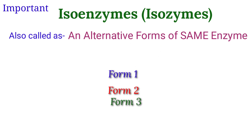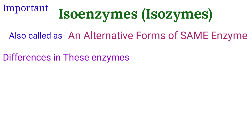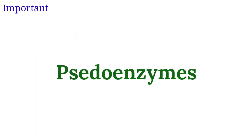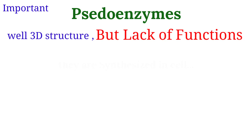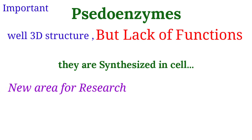Isoenzymes, also called isozymes, are alternative forms of the same enzyme — they catalyze the same reaction on the same substrate but differ slightly in amino acid composition. Pseudoenzymes resemble enzymes in amino acid structure but are not functionally active. They are produced and present in the cell but perform no catalytic function. In bioinformatics, pseudoenzymes are now exclusively studied to understand why they are present in the cell.